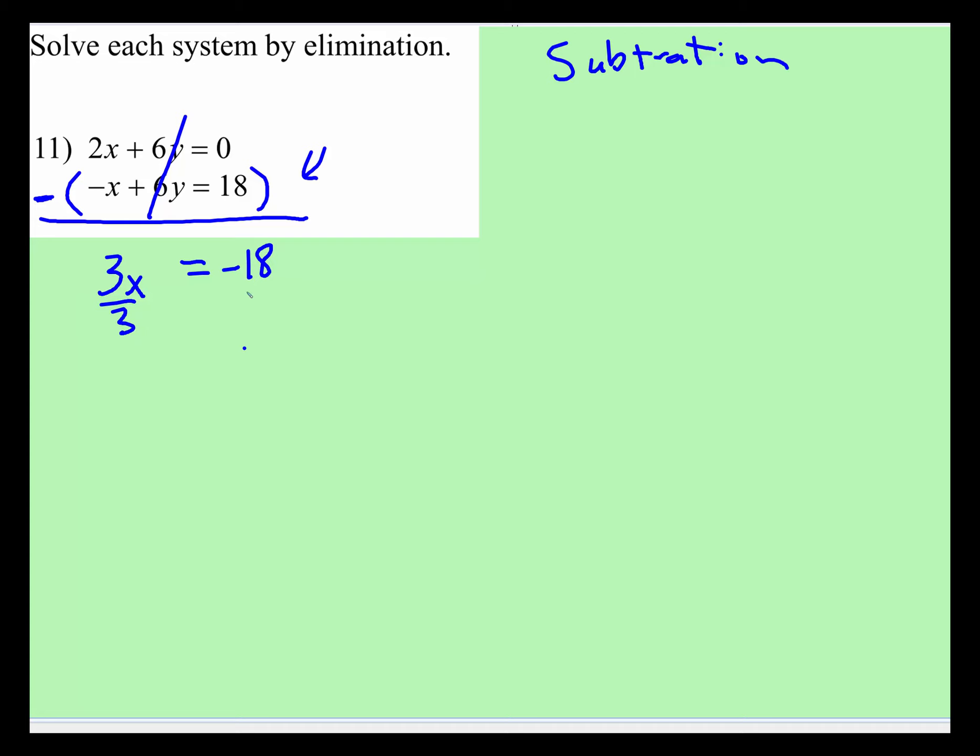And then you're going to divide both sides by 3 because the inverse of multiplication is division. X is equal to negative 6.